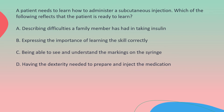A patient needs to learn how to administer a subcutaneous injection. Which of the following reflects that the patient is ready to learn? A. Describing difficulties a family member has had in taking insulin. B. Expressing the importance of learning the skill correctly. C. Being able to see and understand the markings on the syringe. D. Having the dexterity needed to prepare and inject the medication.